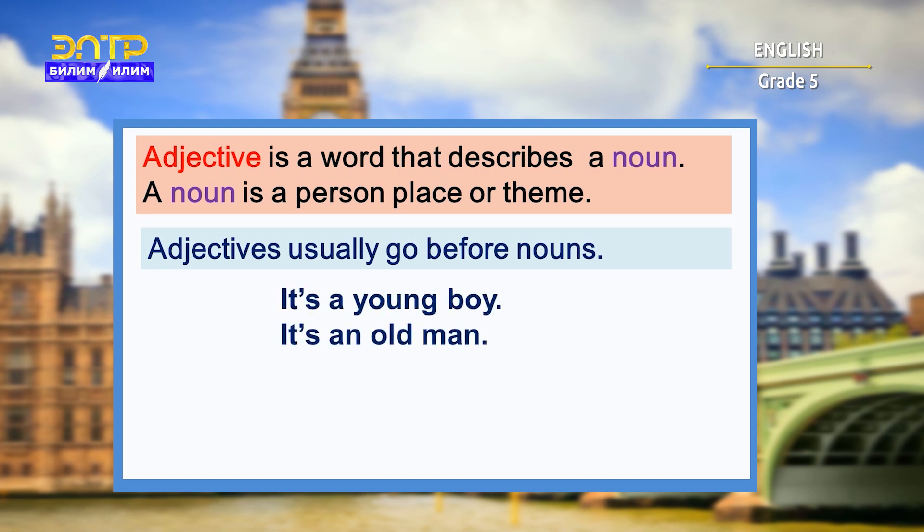Adjectives usually go before nouns. For example: it's a young boy. It's an old man.